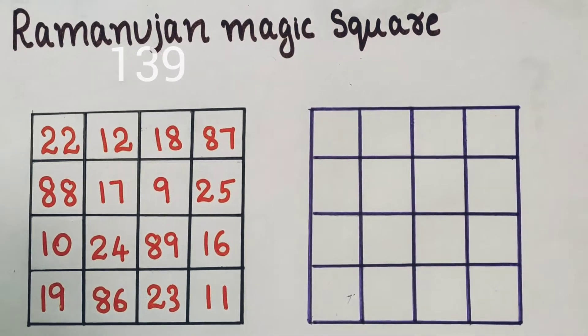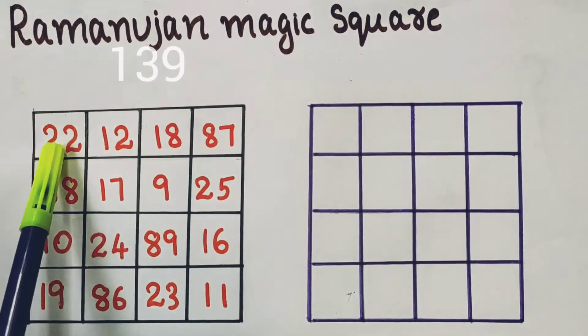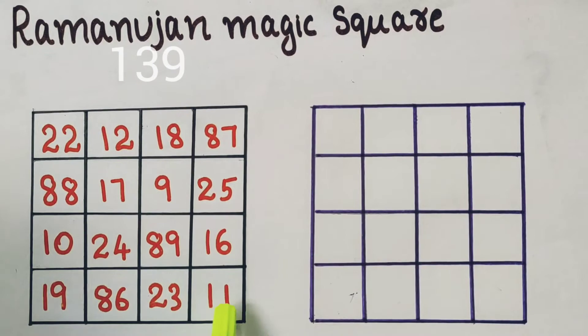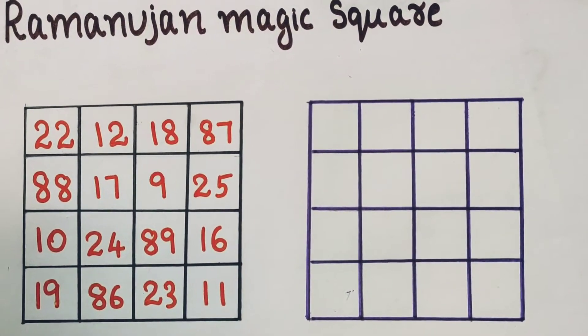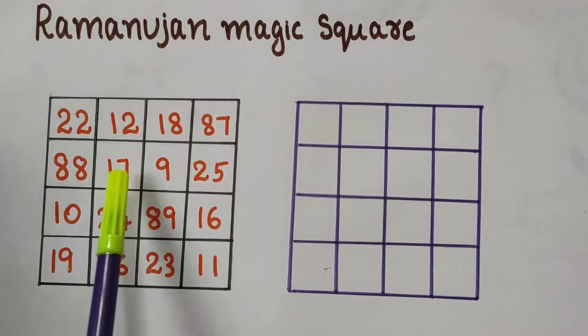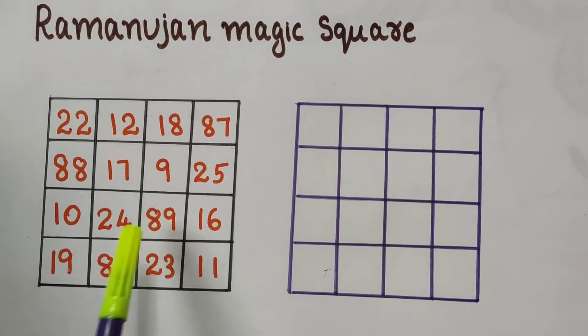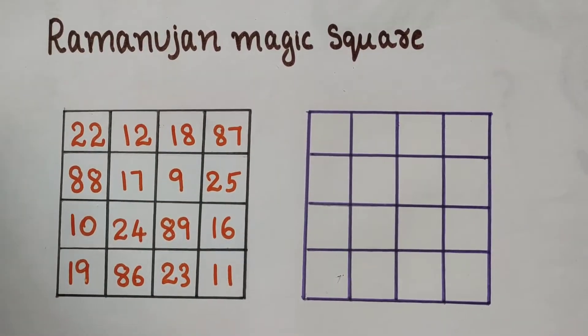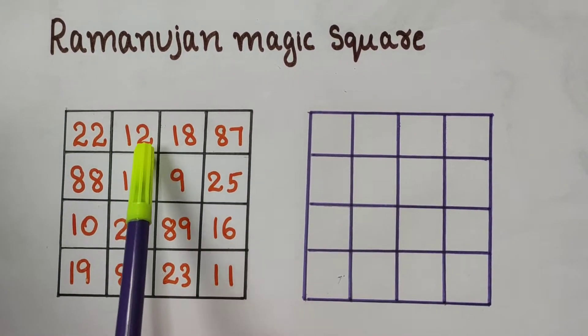The important fact about this magic square is that the sum of corner numbers 22, 87, 19, and 11 is 139. Look at the central square. The sum of 17, 9, 24, 89 is 139.